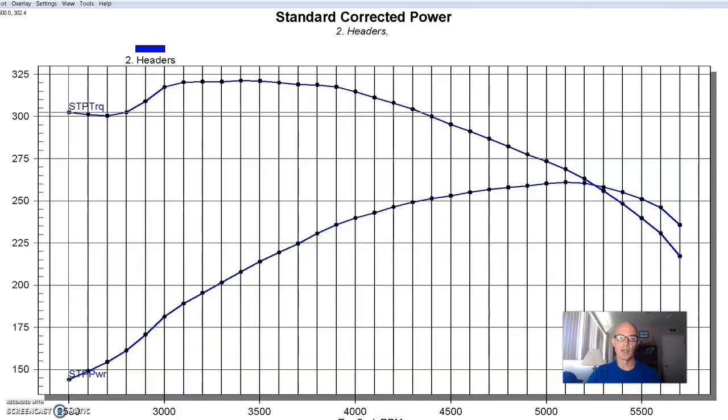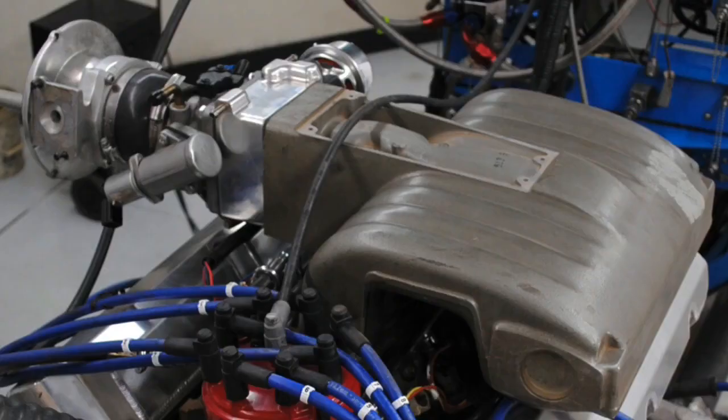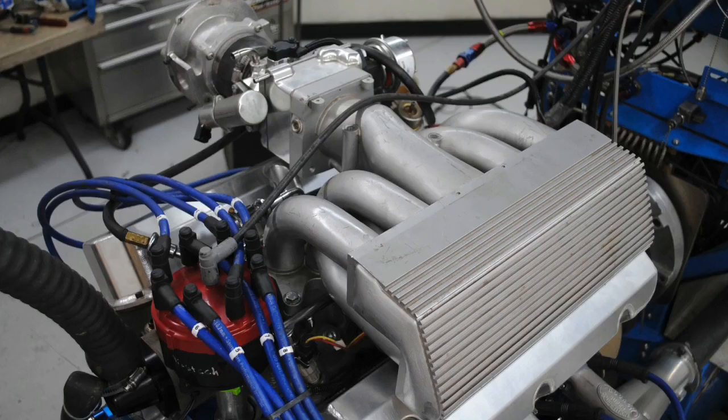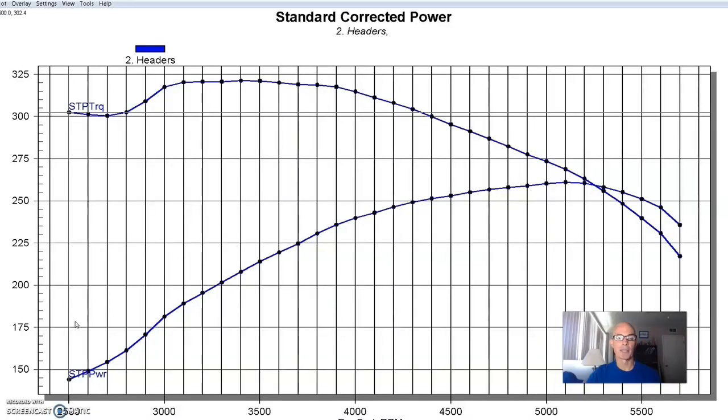And what we did was compare the factory HO intake manifold to a GT40 upgrade, which was pretty common back in the day. I wanted to show you how much a GT40 intake was worth on a very stock kind of mild combination because the power gains offered by any intake upgrade on a 5-liter or any other motor really are dependent upon the combination that you're putting it on.